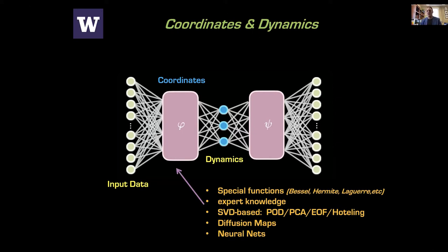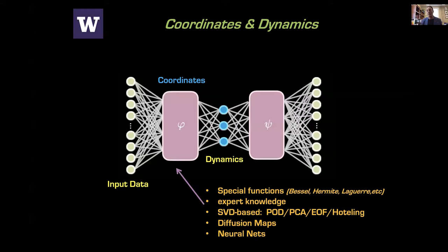The SVD is fascinating because it's been redeveloped in so many different fields independently, all with different names for basically the same thing. There is the proper orthogonal decomposition for fluid dynamics, principal component analysis, empirical orthogonal functions from atmospheric science. If all these fields invented the same thing without knowing it, that tells you something really important about the power of that method.